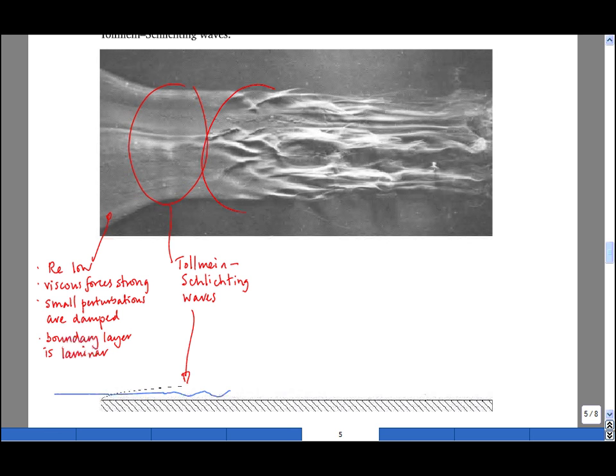These waves cause secondary instabilities to develop on top of them. Those are in this region here, and this is the beginning of transition to turbulence, and the streak line will start to look something like this.